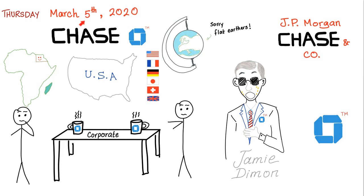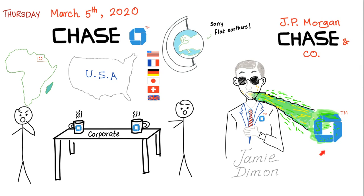On Thursday, March 5th, 2020, in the corporate office of JPMorgan Chase and Company, people were discussing the effect of the new virus on the global economy when suddenly Jamie Dimon started vomiting — he even vomited on the Chase logo. The chairman of the board and board members said, 'What the F, Jamie?' Jamie replied, 'I'm having a chest pain, you bunch of morons.'